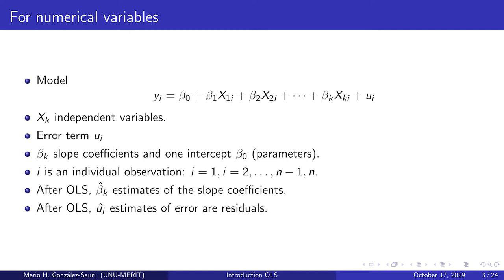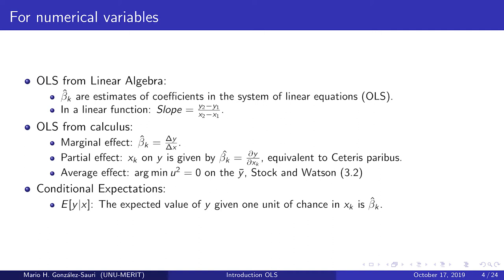There are several ways to write conclusions about the estimates of beta. In general, the effect of x_k on y is given by beta_k while holding all the other regressors included in the estimation constant. Because the estimates of beta are coefficients in a linear system of equations, we can directly interpret these estimates of beta_k as slopes — that is, the rate of change in y related to one unit of change in x_k.